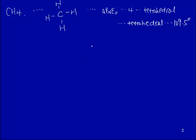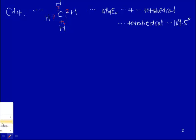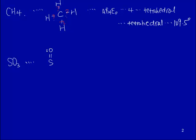This is the VSEPR theory. However, we did not address how those single bonds are formed. Similarly, looking at sulfur trioxide, going through the steps — and don't forget to consider formal charges to minimize them — this gives the dominant Lewis structure for sulfur trioxide.